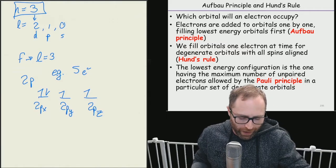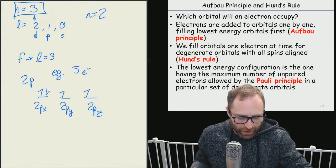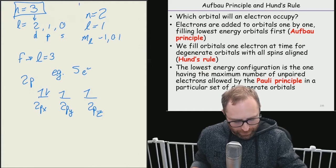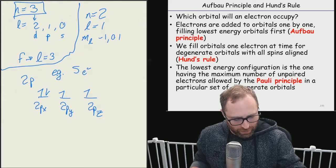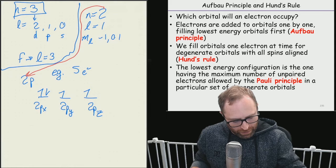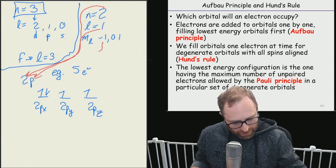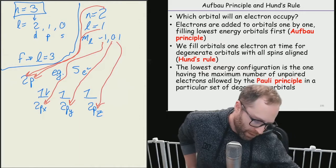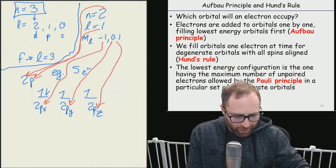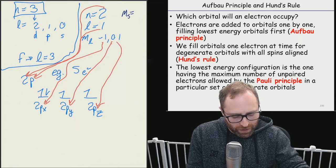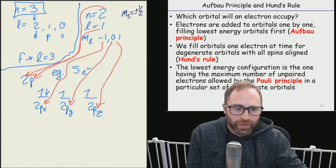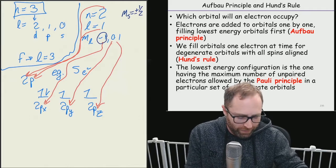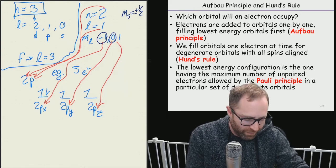When we go back to n equals in this case 2, l is equal to 1, m sub l could equal negative 1, 0, and 1, right? The quantum number we didn't write was m sub s. Well m sub s can always equal plus or minus one half, but this value of m sub l is going to have plus and minus one half, this value of m sub l is going to have plus or minus one half, and this value is going to have plus or minus one half.